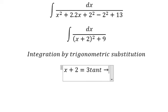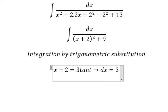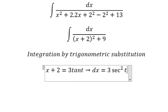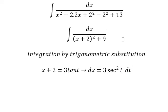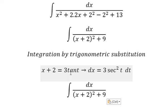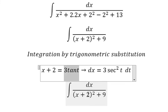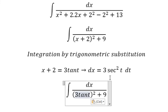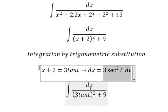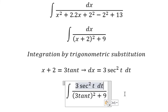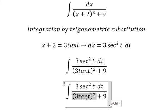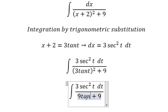For dx we get 3 sec² t dt, so we put this one in here. We change dx for this one, so this one you get 9 times tan² t.